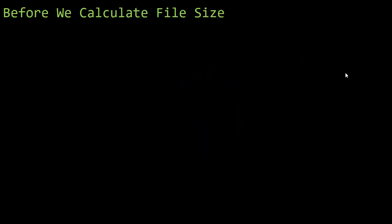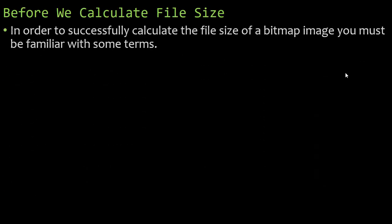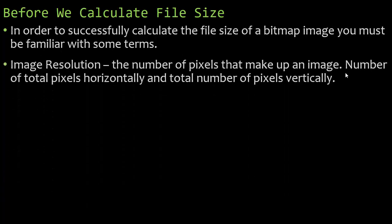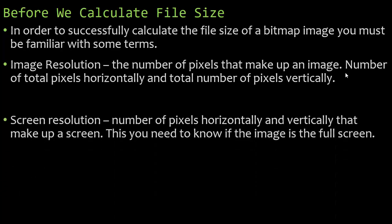We need to be able to calculate the file size, but before we do that there are some words you need to be familiar with. Image resolution is the number of pixels that make up an image — you take the total number of pixels horizontally and the total number of pixels vertically. If it's a 19 by 15 image, you simply multiply that to get the total number of pixels. You also need to know screen resolution — the number of pixels horizontally and vertically that make up a screen.